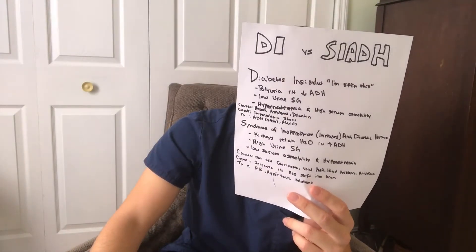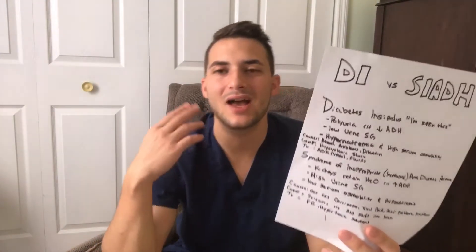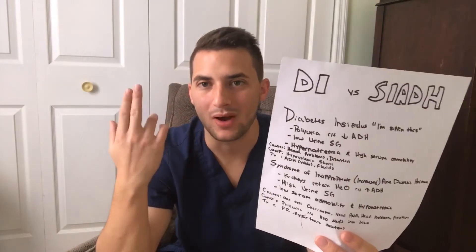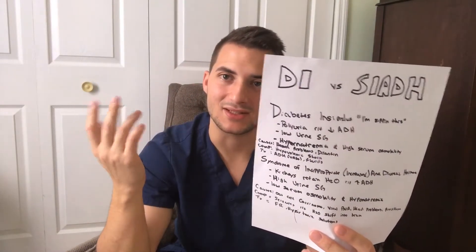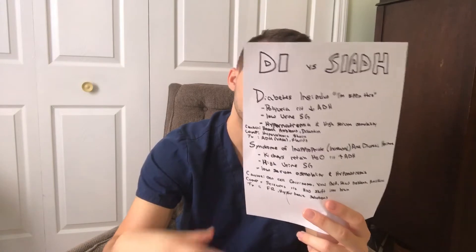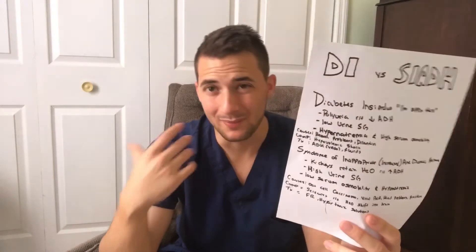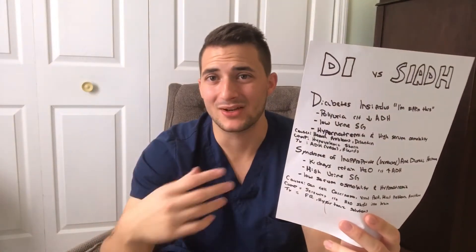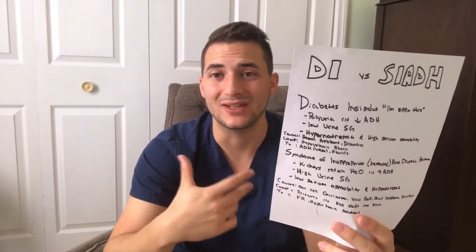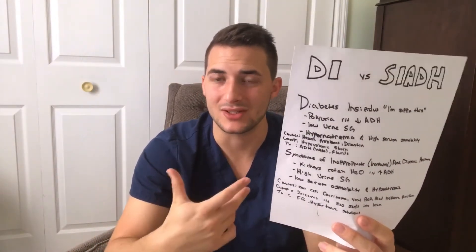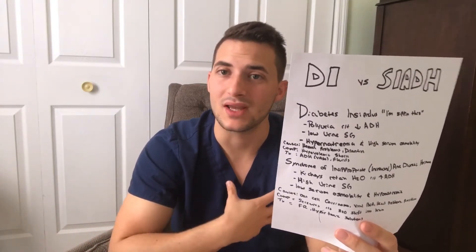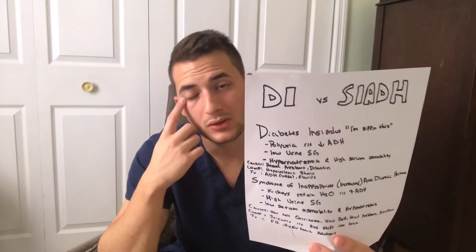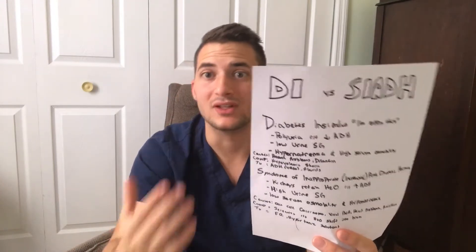What are the causes of diabetes insipidus? A lot of times it's a head problem, more so than SIADH. What are the complications? The big complication here is hypovolemic shock and severe dehydration. They go into a shock state because they don't have enough fluid in the tank to really perfuse — they go into hypovolemic shock.